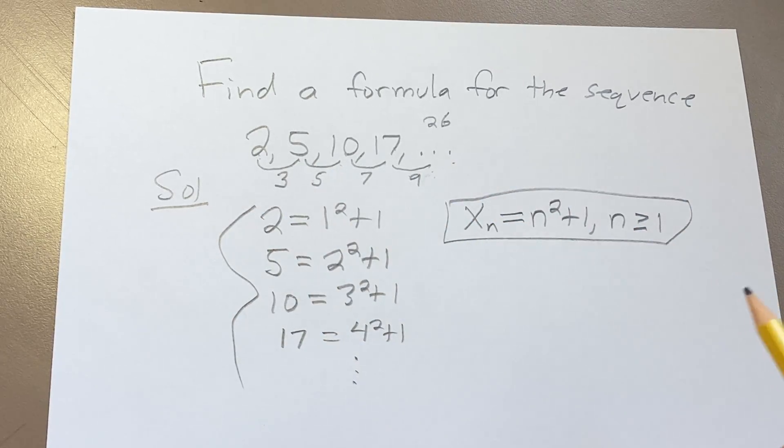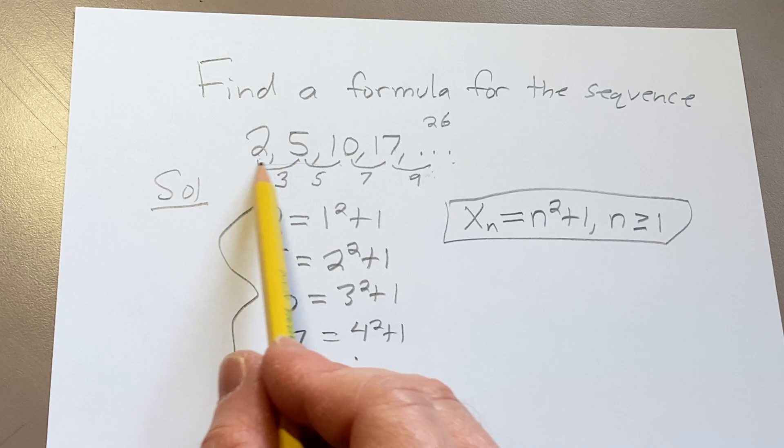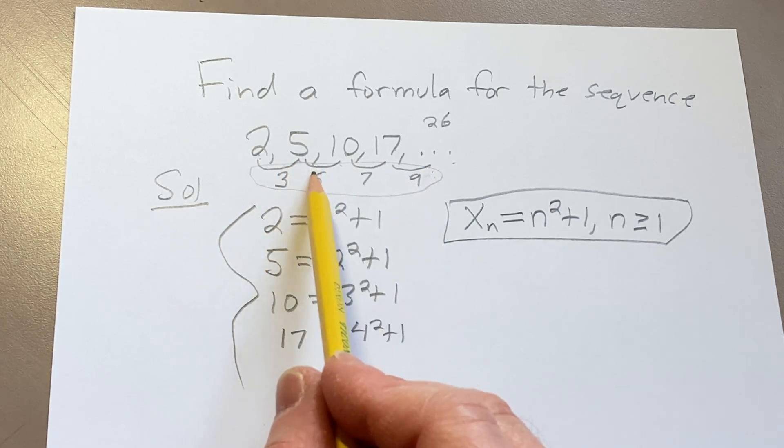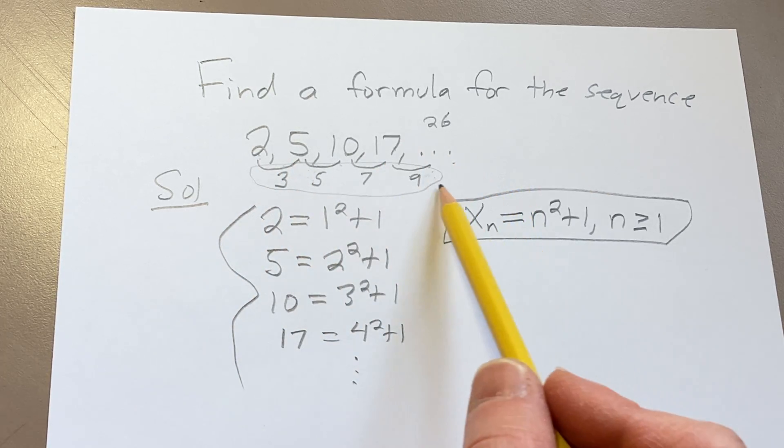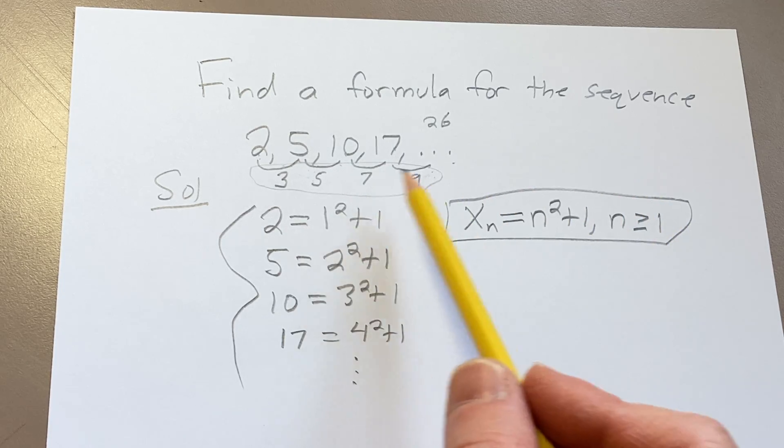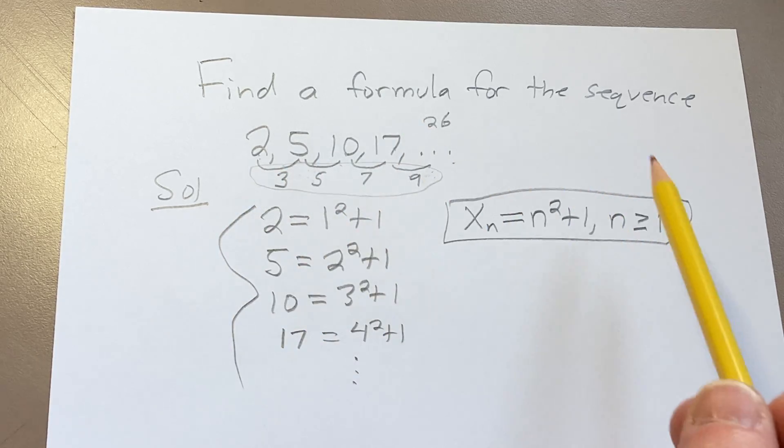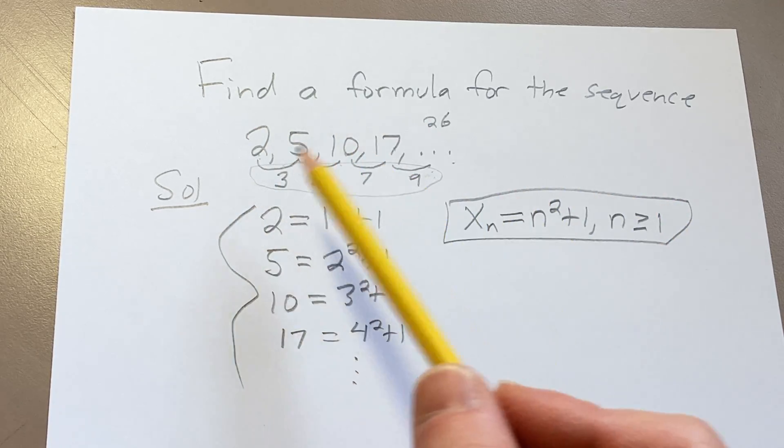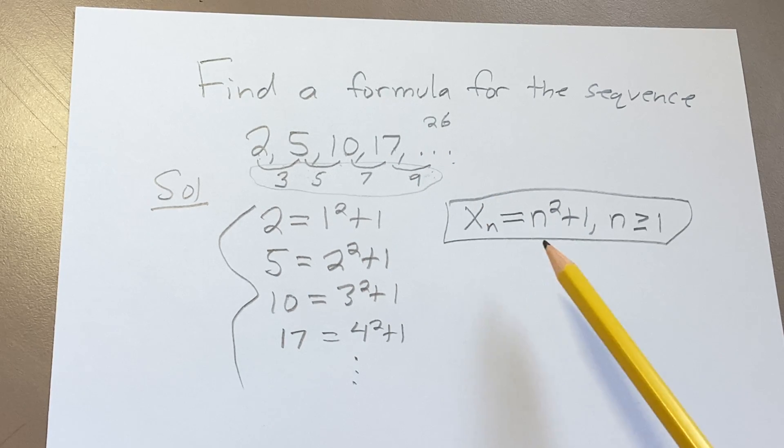So these problems just simply take a lot of thought. Systematically I always like to look at this first, just to see if it's arithmetic or something like that. And then you want to look at is it a factorial, is it 2 to a power, is it something squared? Things like that are things you want to think about when you're approaching problems like this.